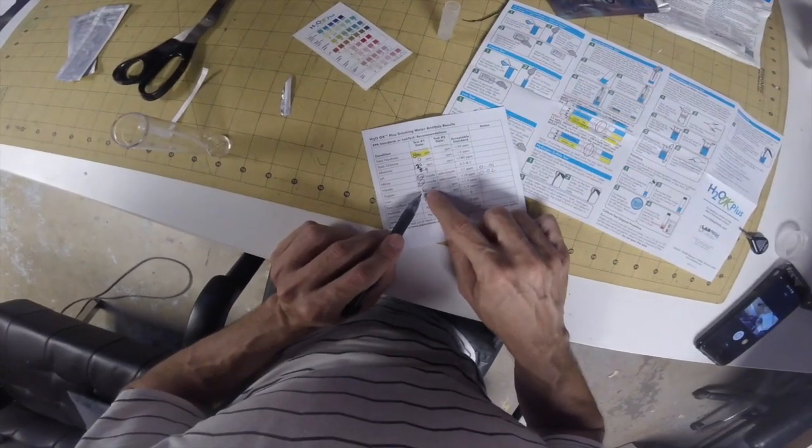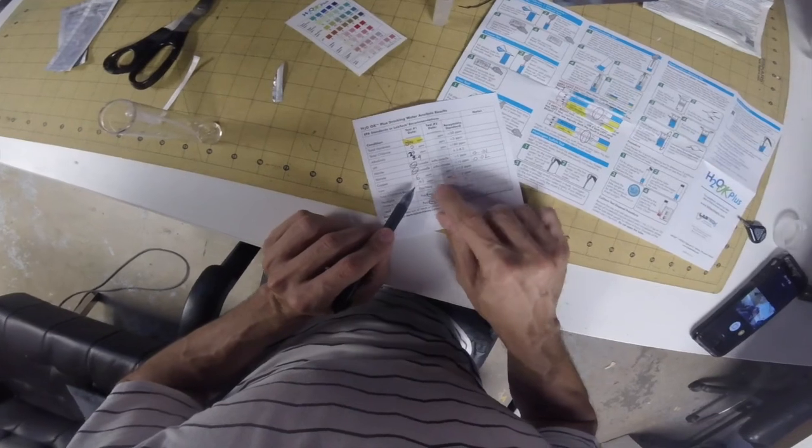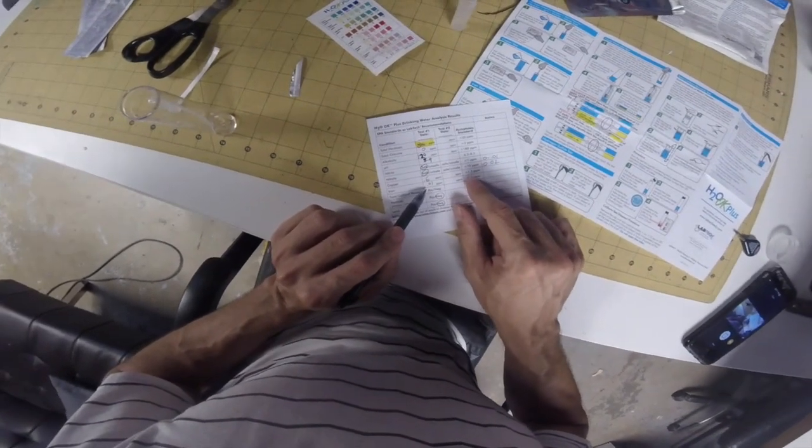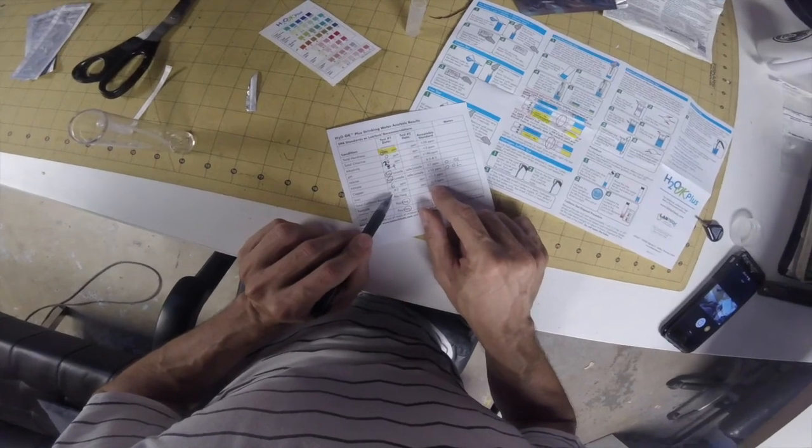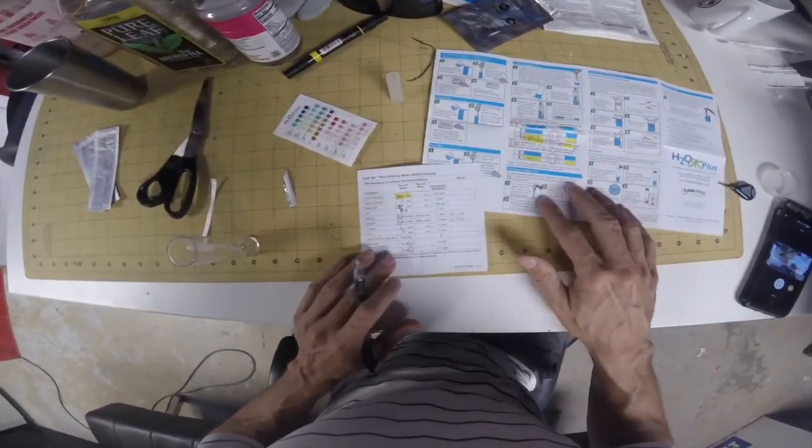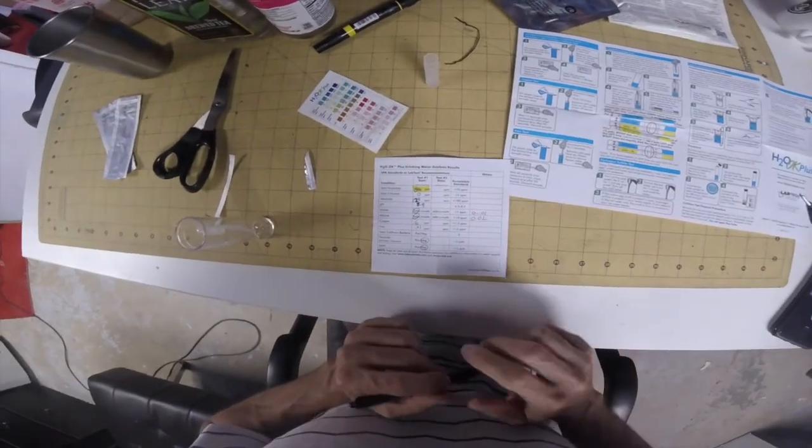Copper 0.6, which is safe. And iron 0.01, which is safe. So the water checks out. Everything checks out, there's nothing really out of the ordinary here.